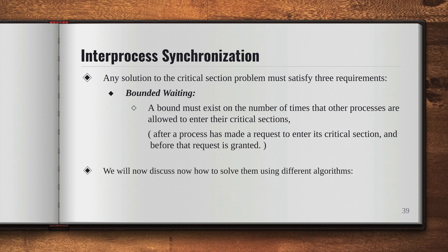We will now discuss how to solve the critical section problem using different algorithms. There are several algorithms — one is Dekker's solution for mutual exclusion, and the second is the Bakery algorithm. We'll discuss these in the next video.